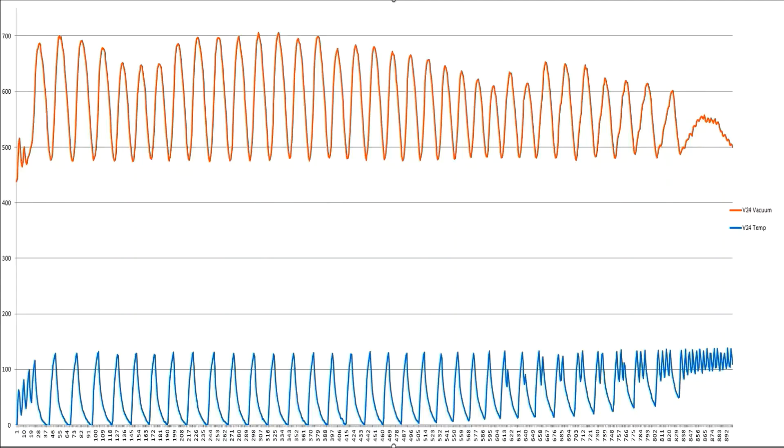We're going to take a look at the data from the Harvest Right freeze dryer. This is version 24 and the relationship between vacuum pressure up above noted in this red graph to the shelf temperature below noted by the blue graph. We're going to clip a segment of this graph and explain it in greater detail.